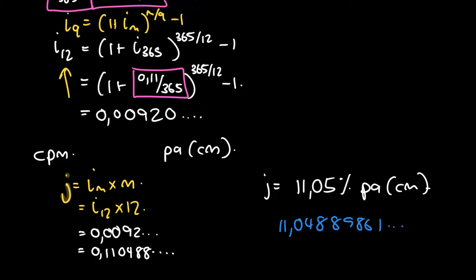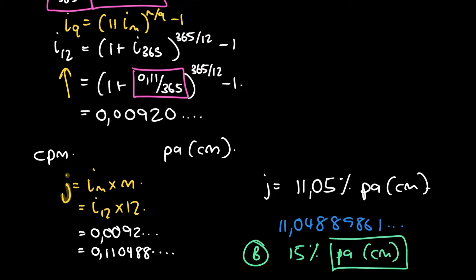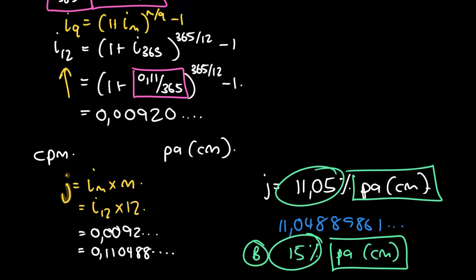Now we can make a comparison with Institution B's 15% per annum compounded monthly. Since both rates are now expressed as per annum compounded monthly, we can directly compare the percentages. We want the lowest rate because we're taking out a loan. So Institution A, at 11.05%, is the one we want.